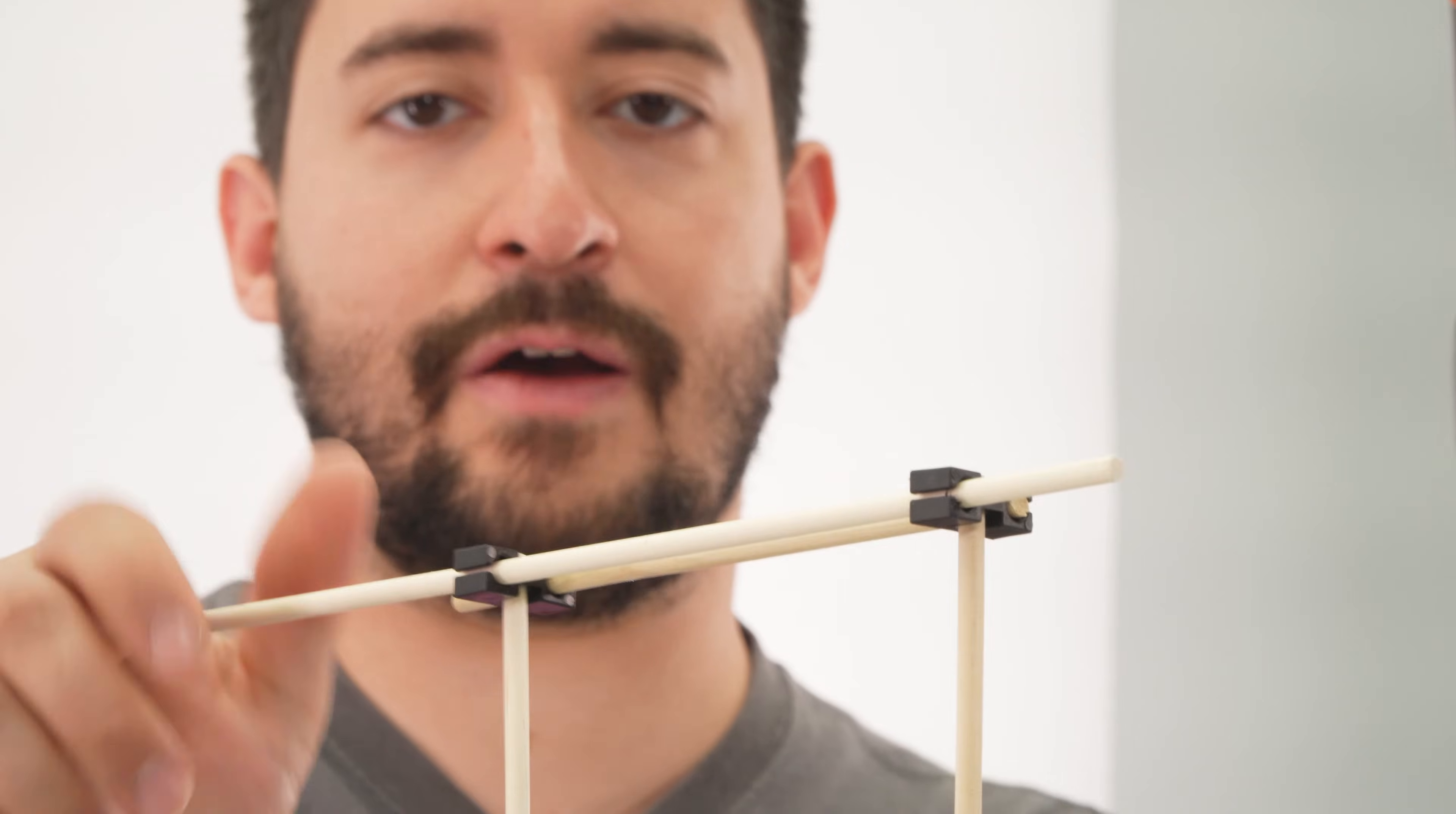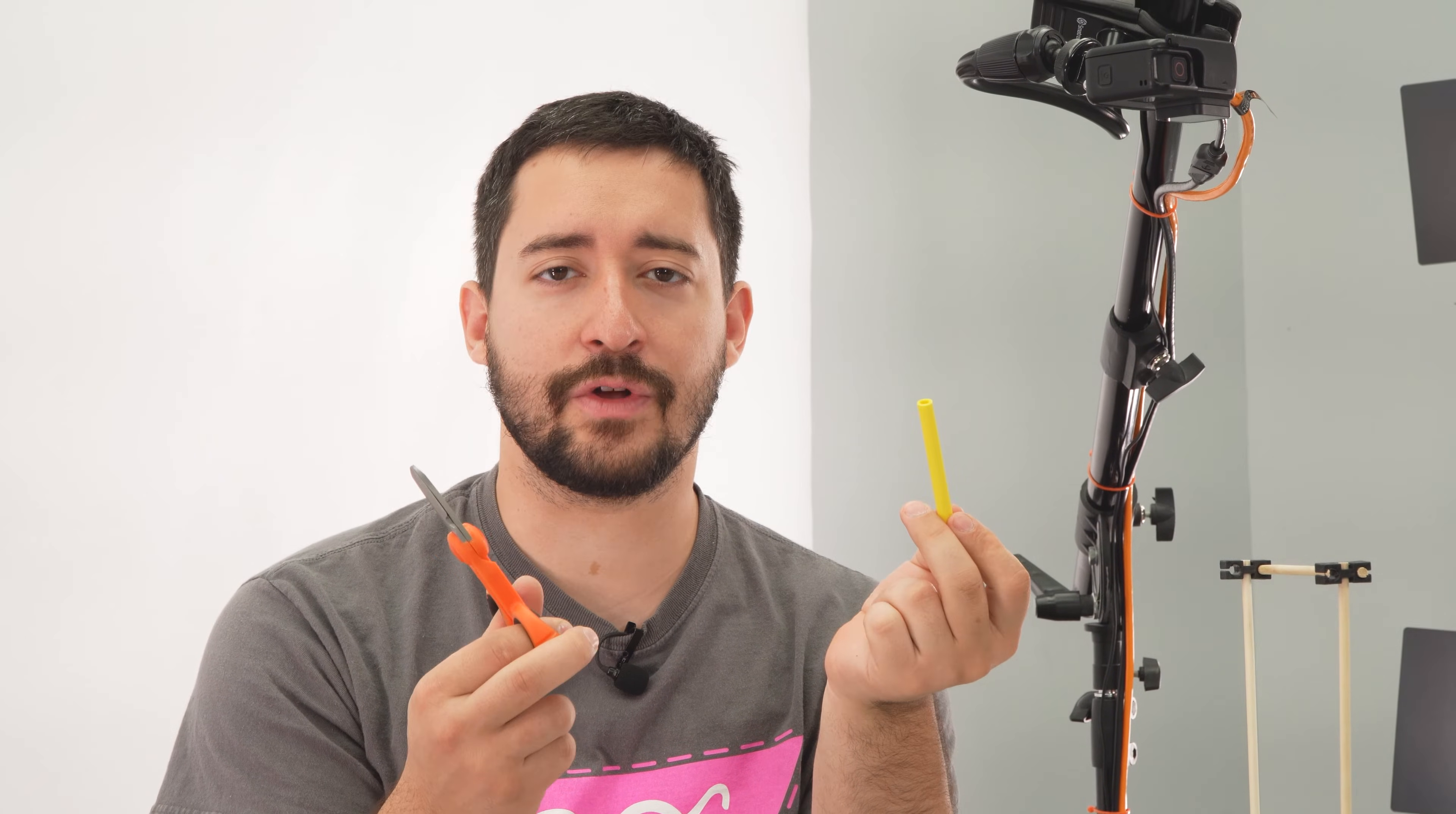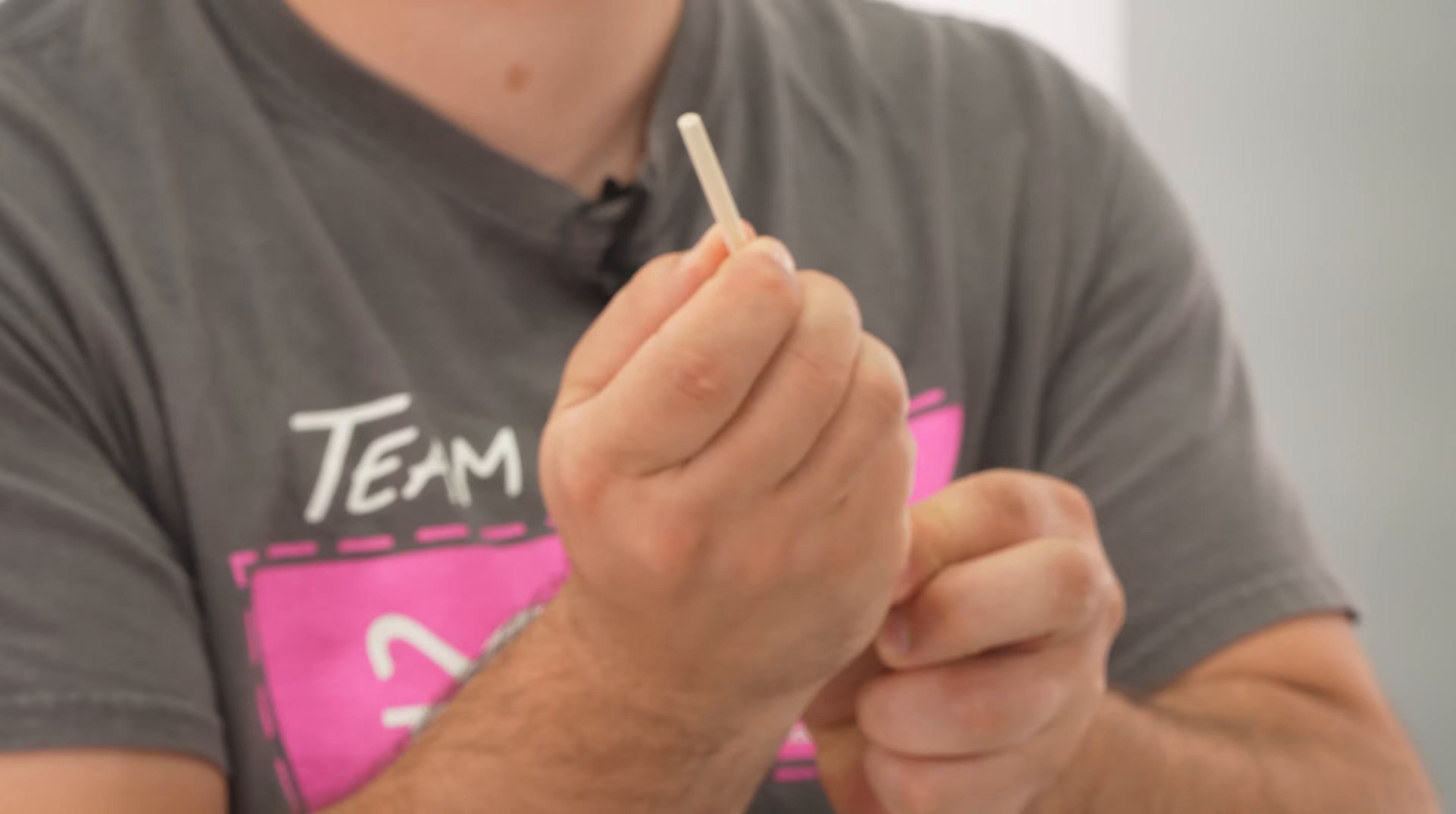As you can see, the dowel can now spin. Now I'm going to need two one centimeter or half inch pieces of slide stop. I'm not going to measure because they don't need to be perfect. You can cut slide stop with a pair of scissors or a teacher geek multi-cutter. Push that piece of slide stop onto your dowel.